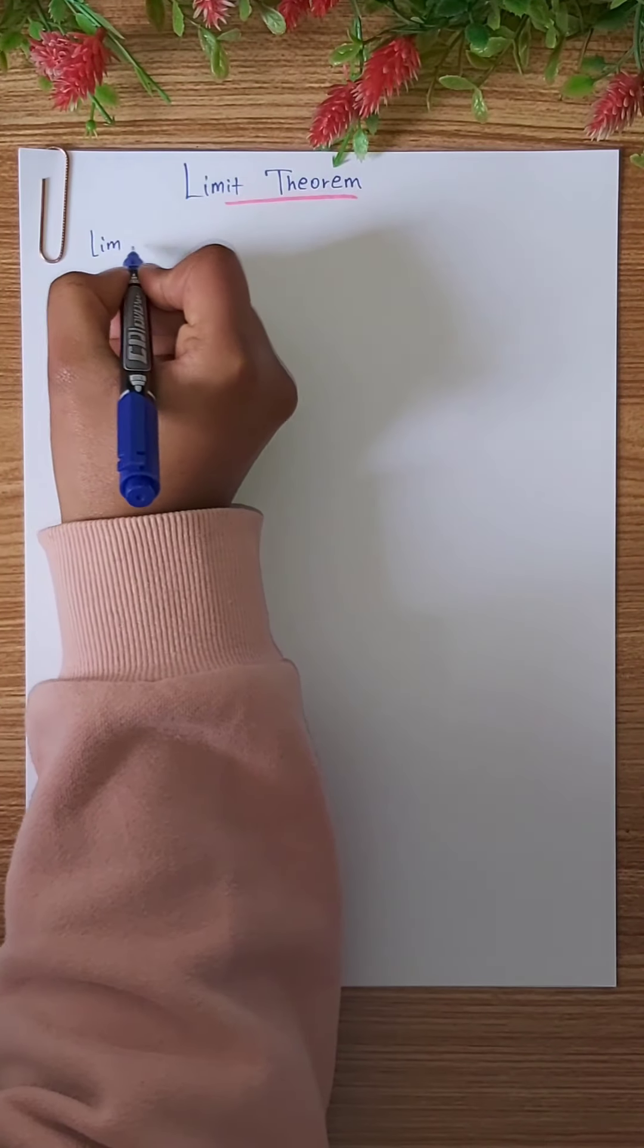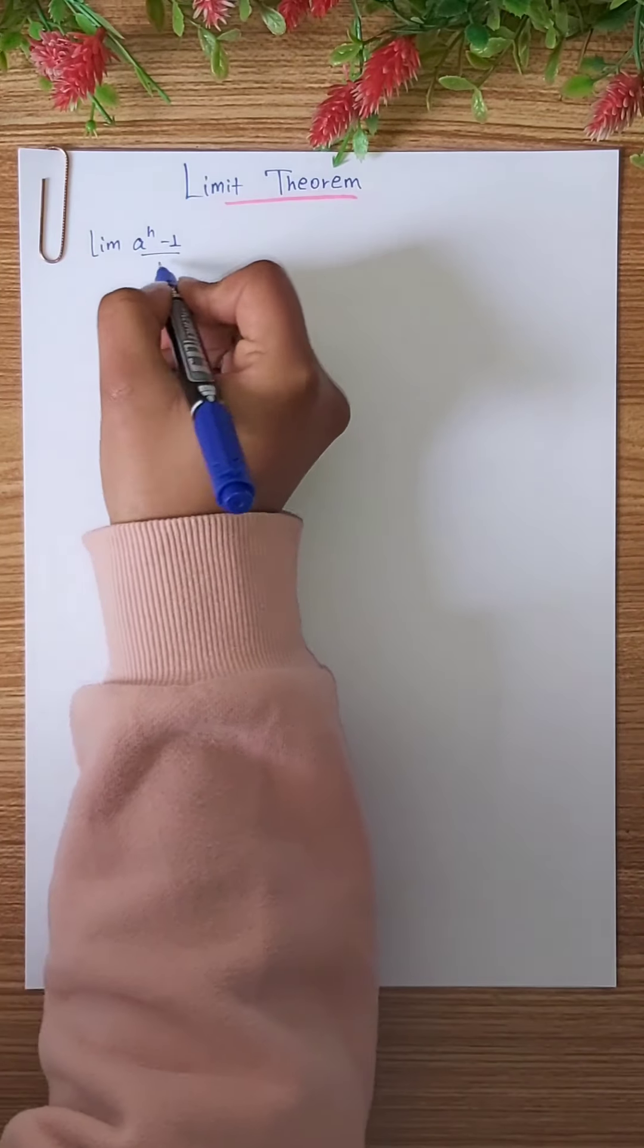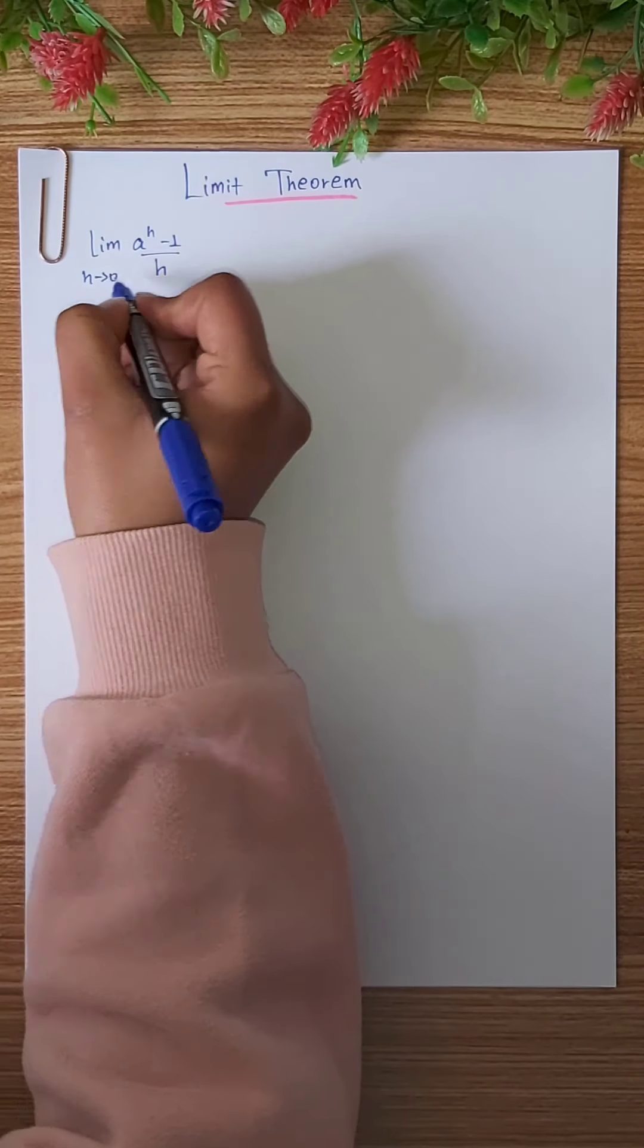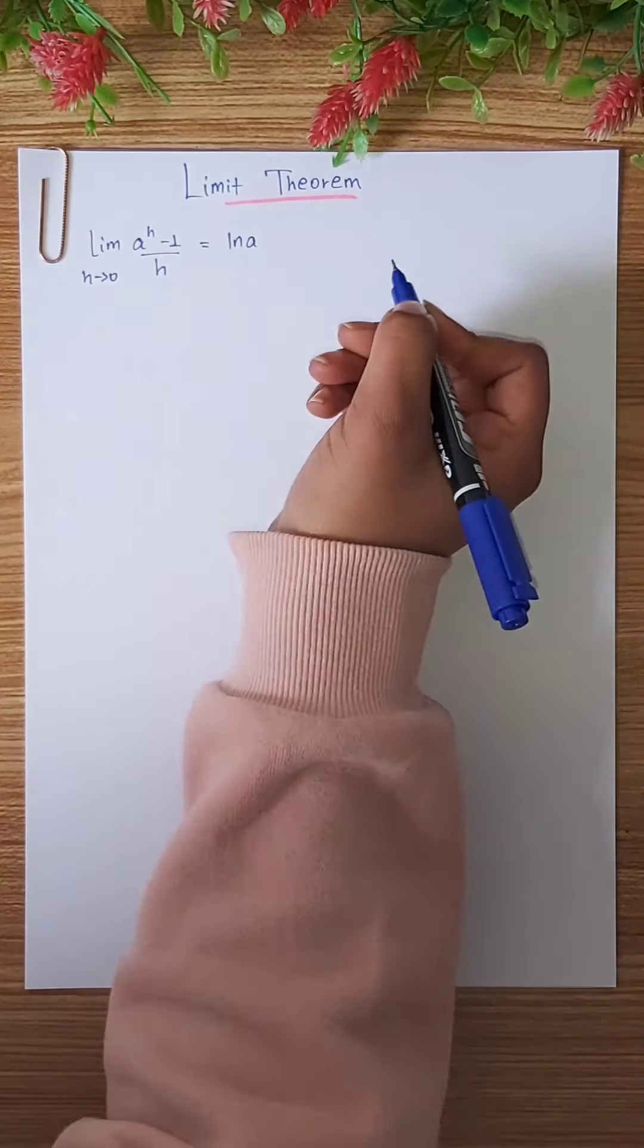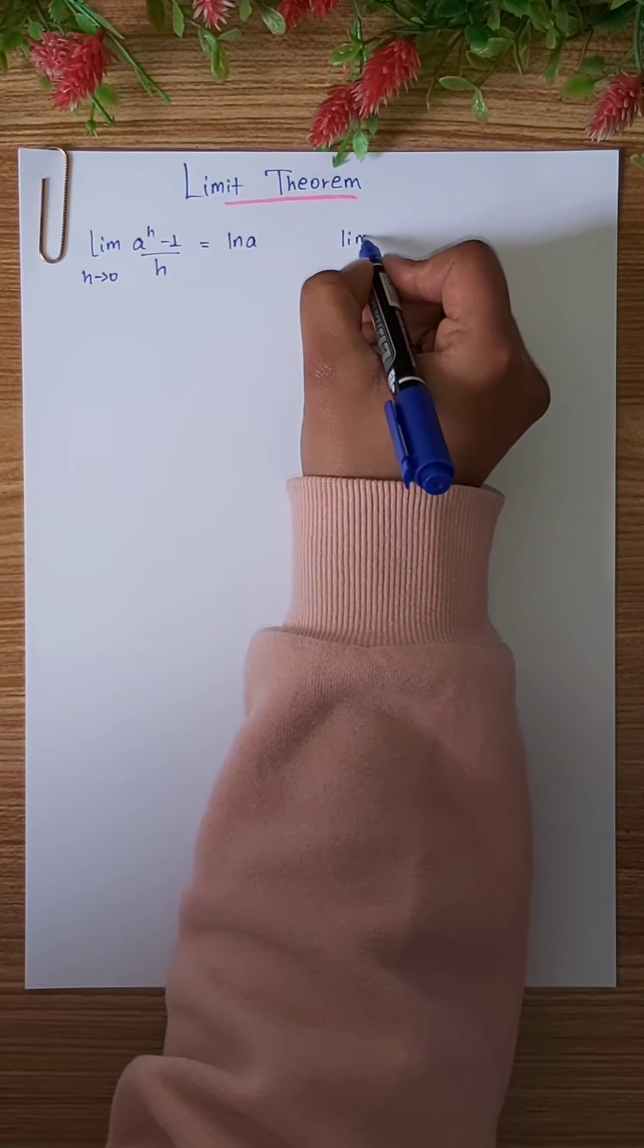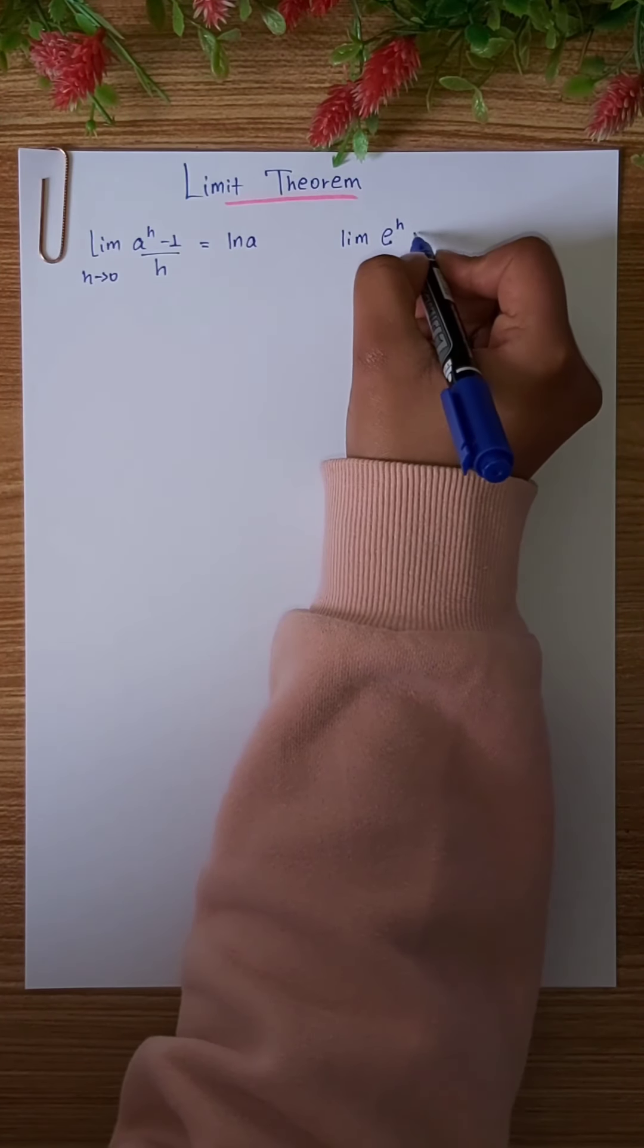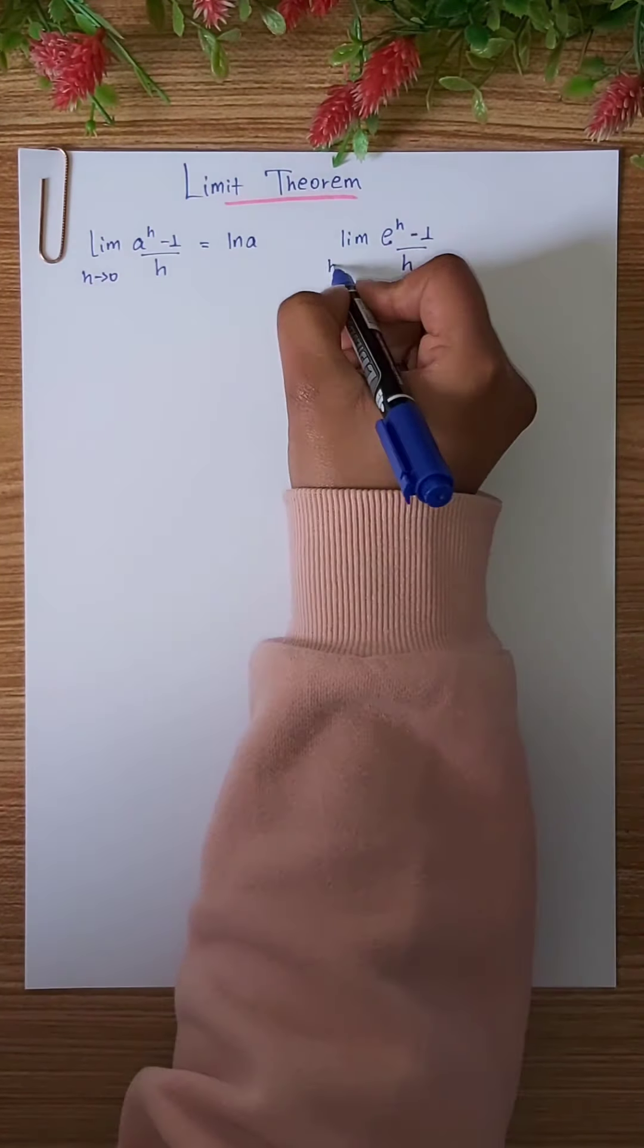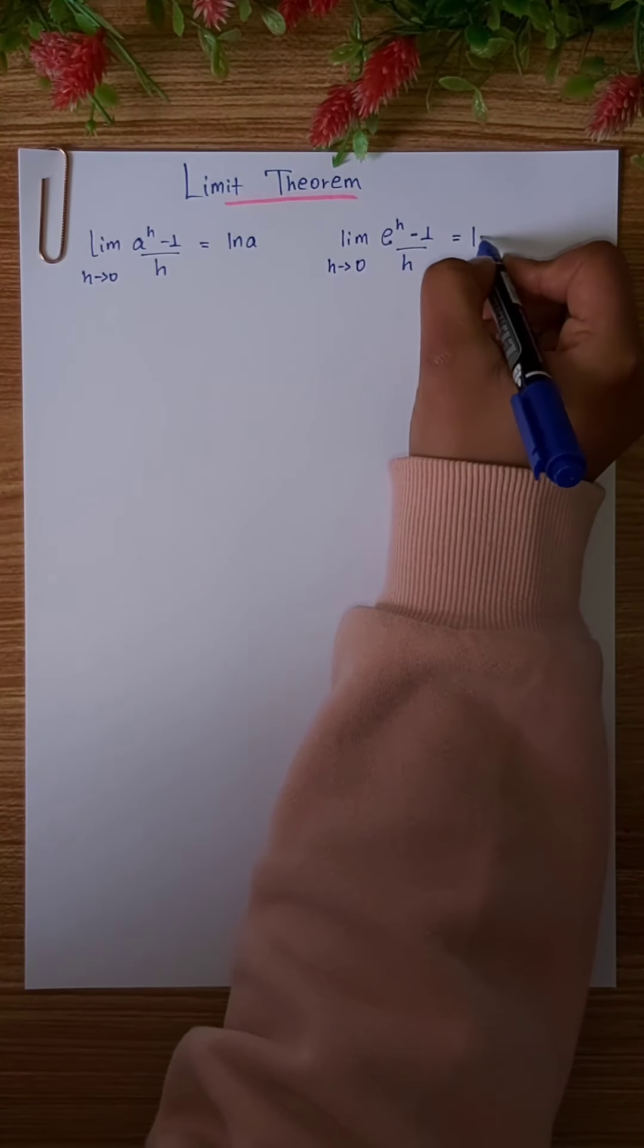Let's take a look at the limit of a to the power of h minus 1 over h as h tends to 0. We have this constant.